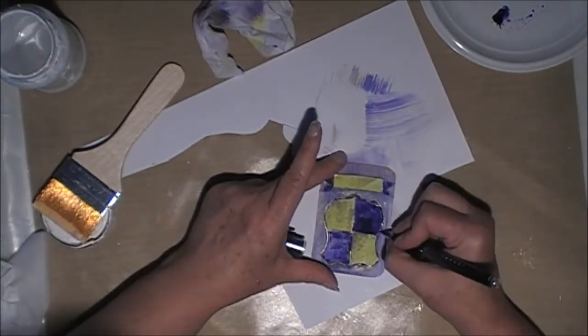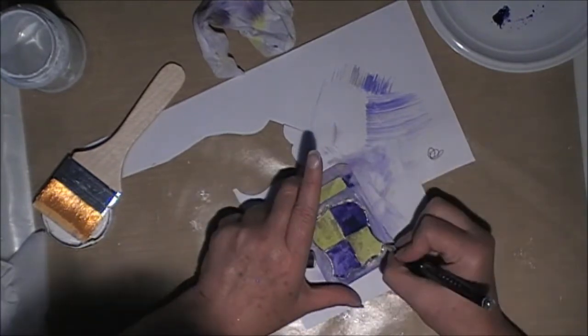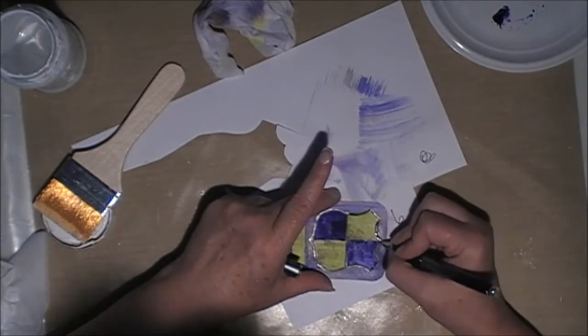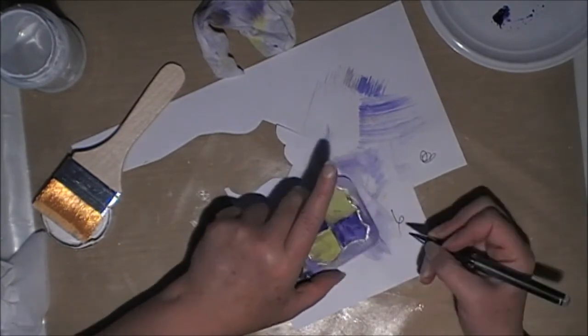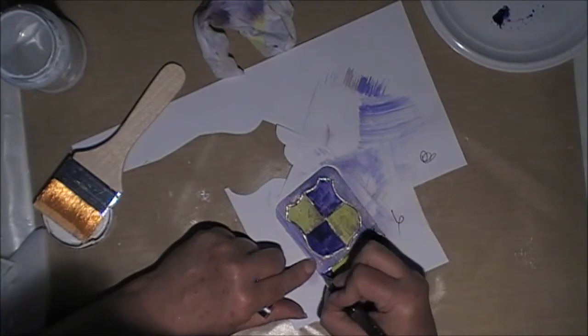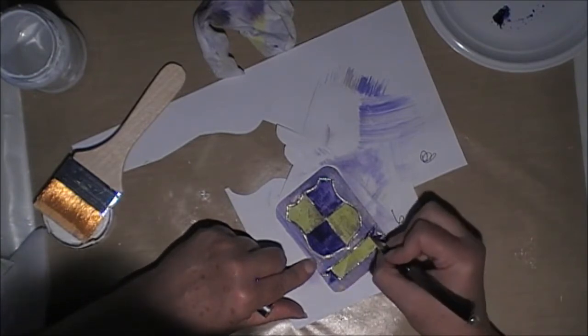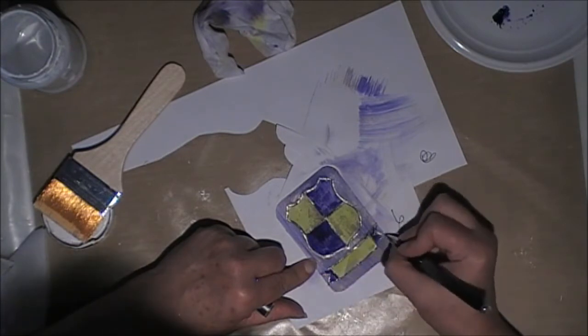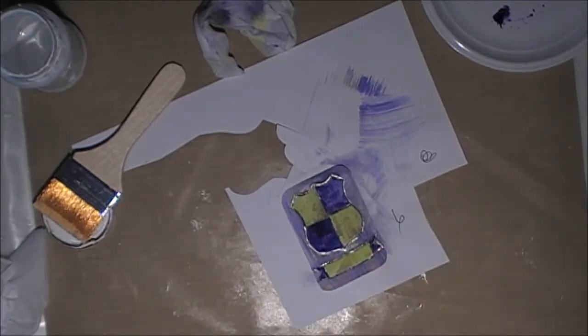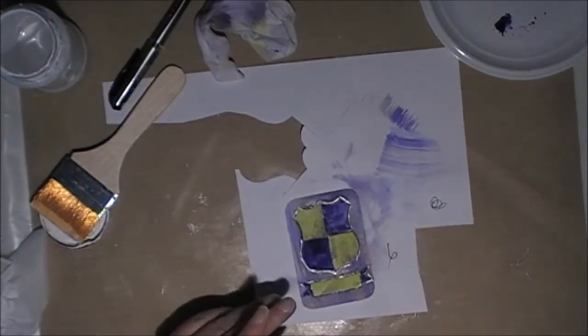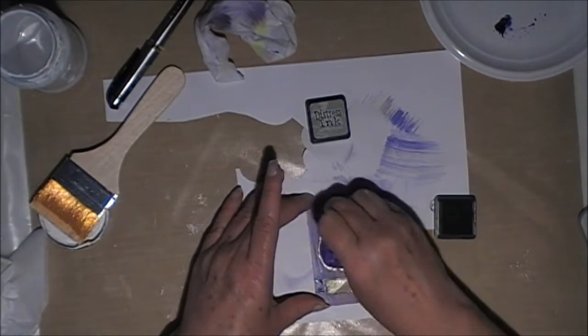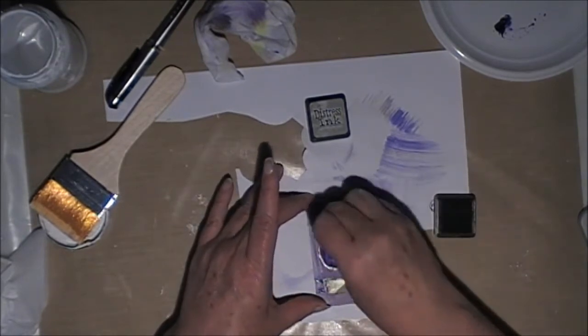So I'm just going around the edges of the image now with the gel pen, just to bring a sharper edge to the image. I've just dried that all off, just using some pumice stone distress ink.